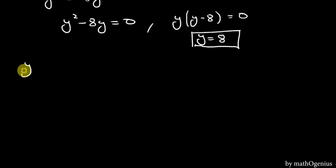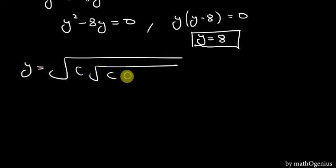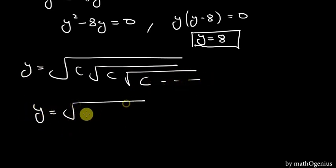This can be solved generally for any constant. So y is equal to root of c, root of c, root of c, and so on. So y is equal to root of c times y. Squaring, we get y square minus cy is equal to 0.